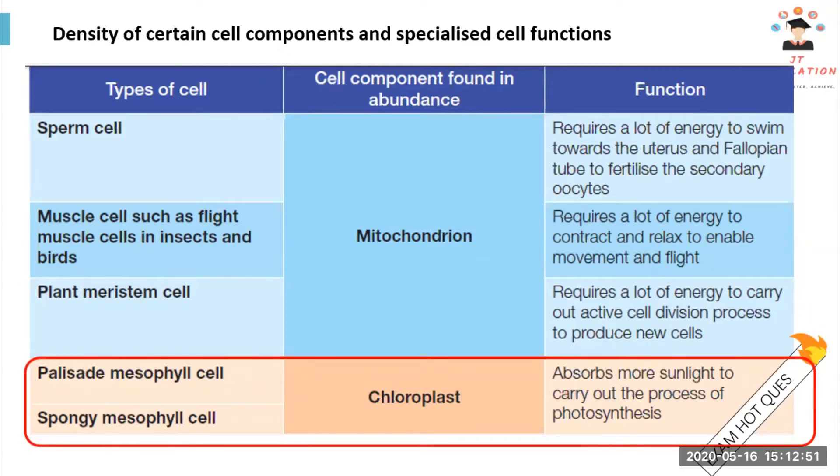Palisade mesophyll cells and spongy mesophyll cells have a lot of chloroplasts to absorb sunlight and carry out photosynthesis.